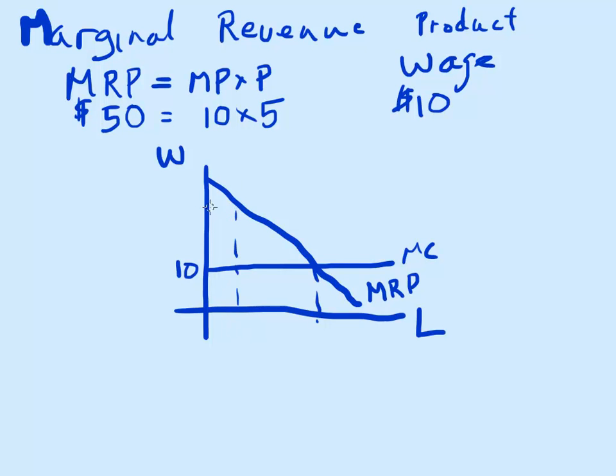Hiring a worker when that worker is producing, let's say, $50—that's the additional revenue from hiring the worker. The marginal revenue product is greater than the marginal cost. I want to hire more. I want to hire workers until the additional hour of work is equal to $10.